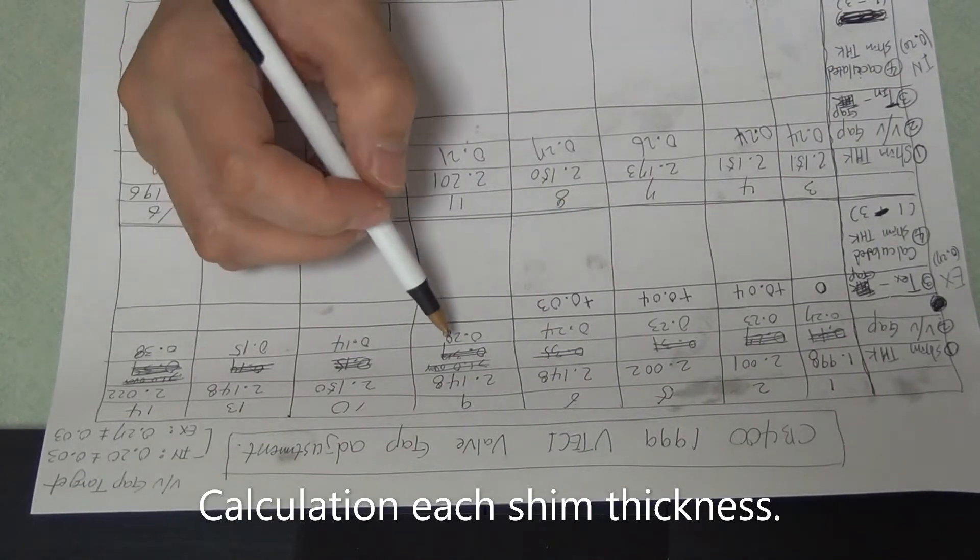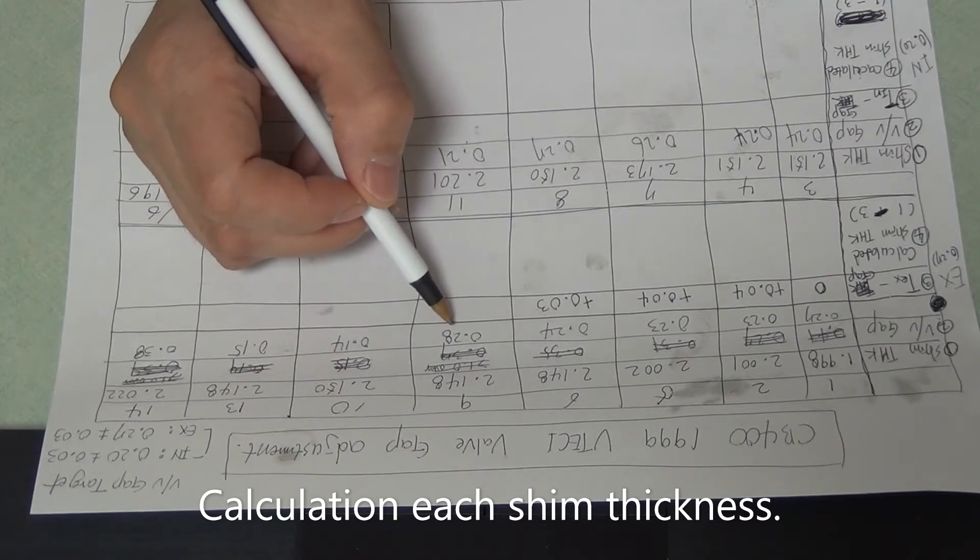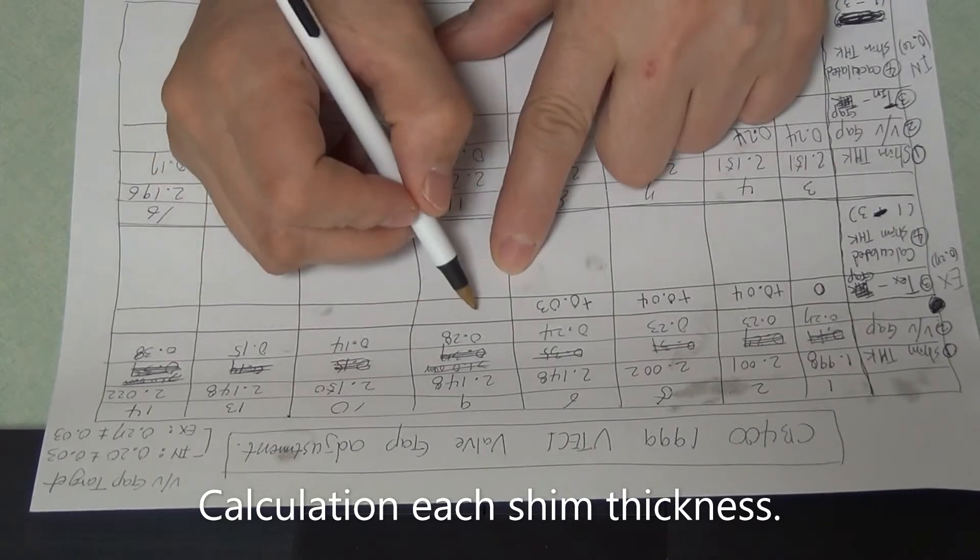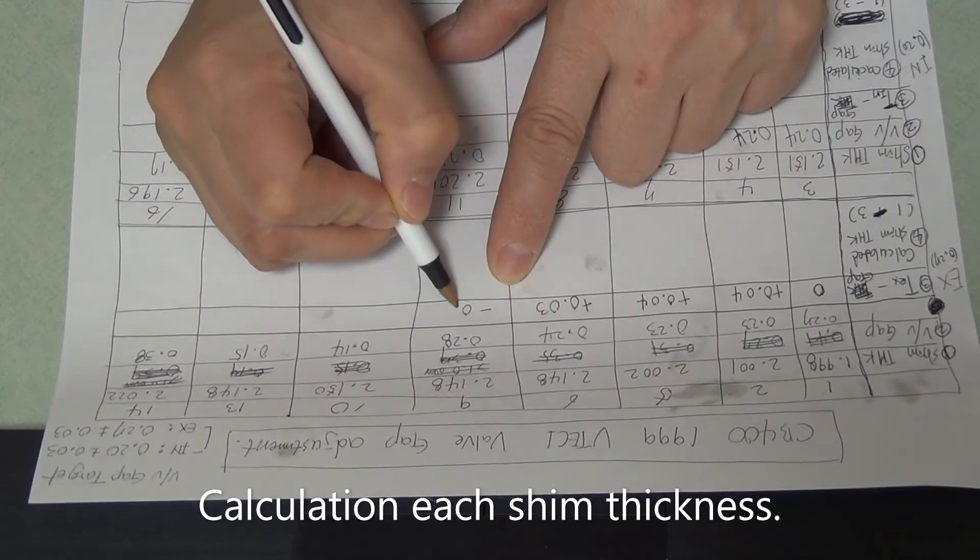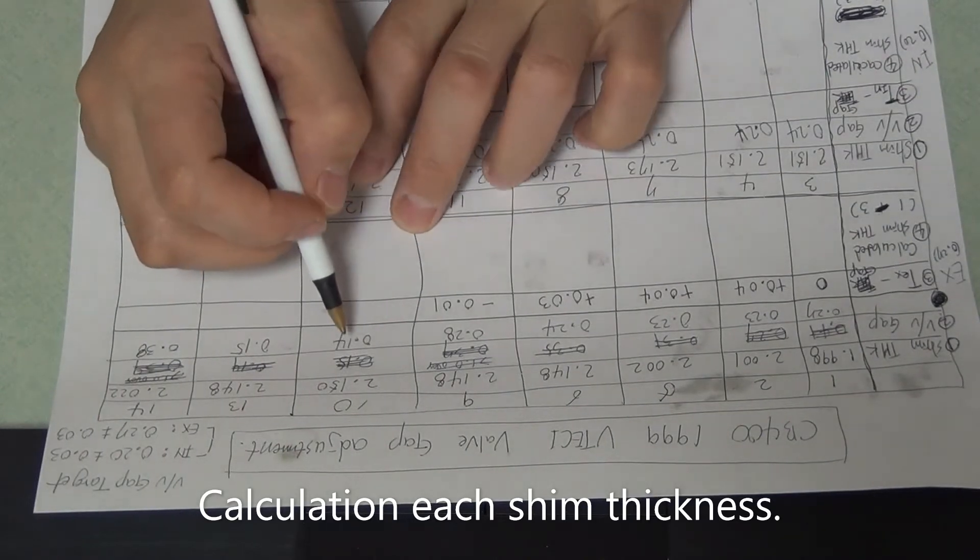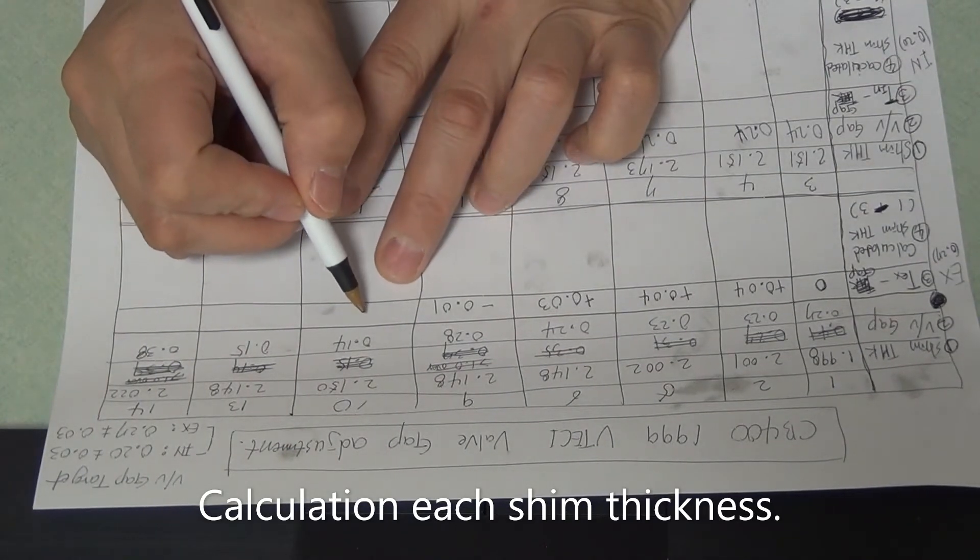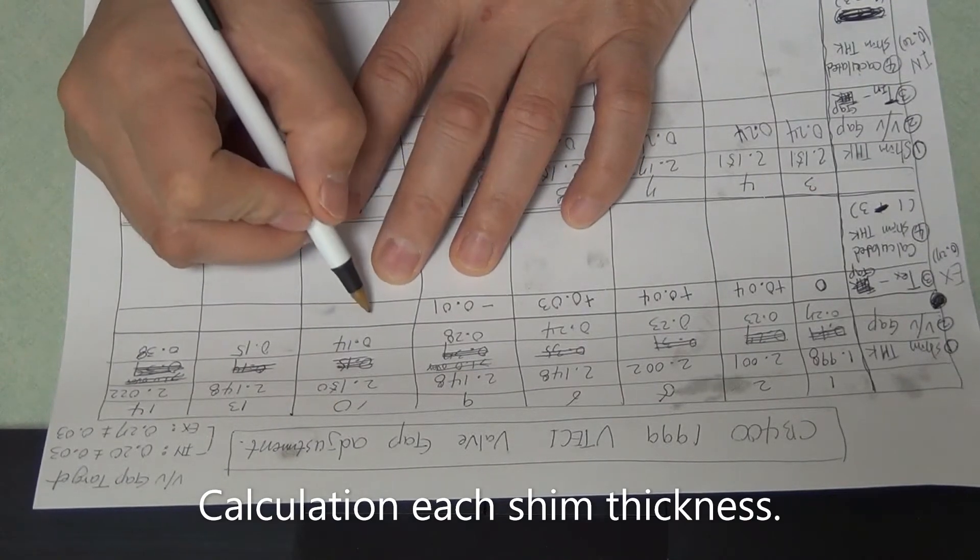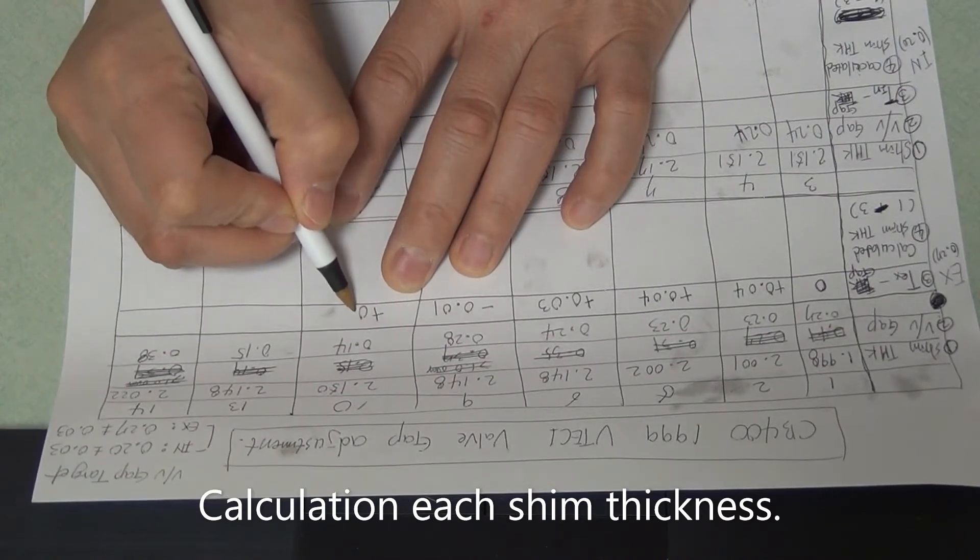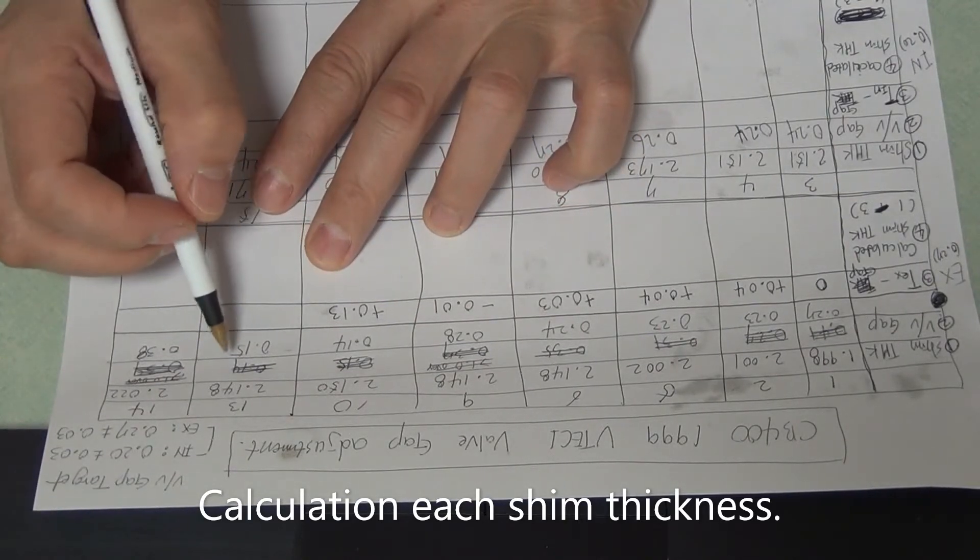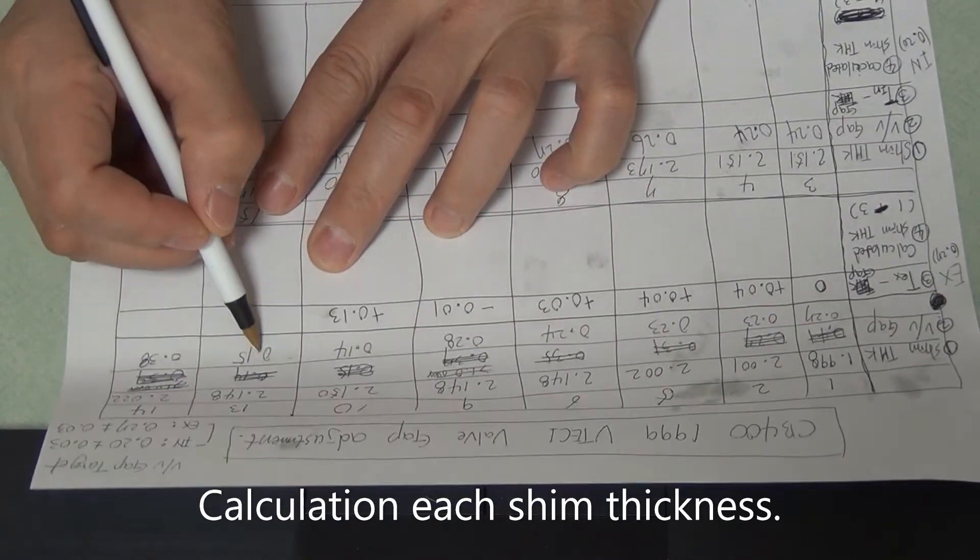And number 9 valve gap is 0.28, so 0.27 minus 0.28 is minus 0.01. So this is 0.14, so plus 0.13. And number 13 is 0.15.